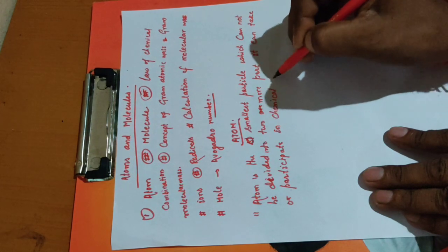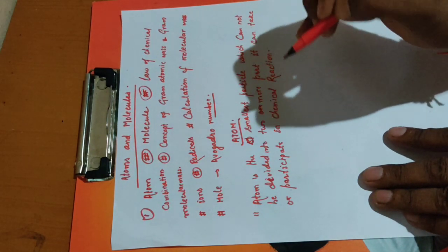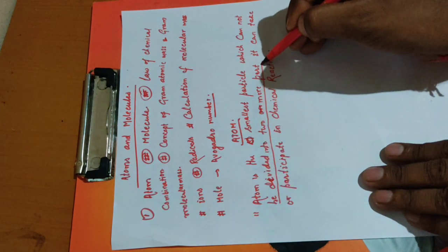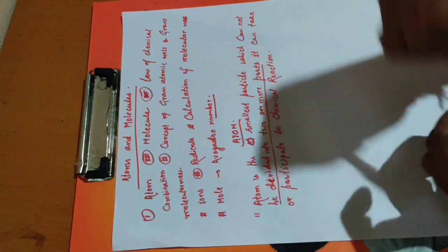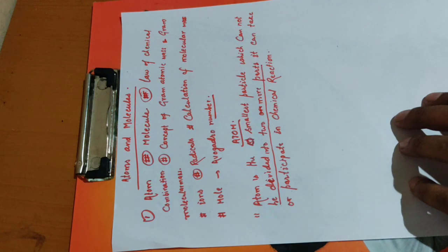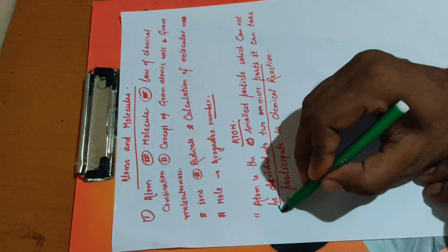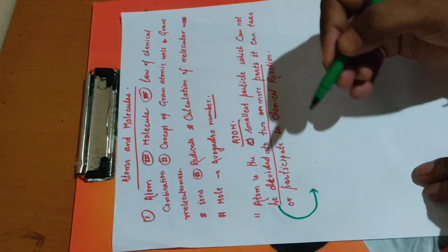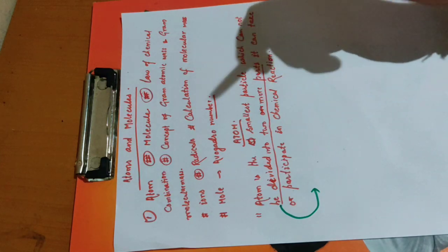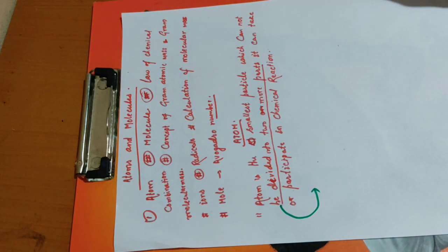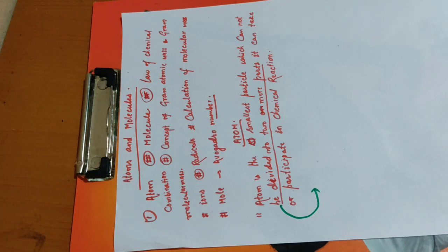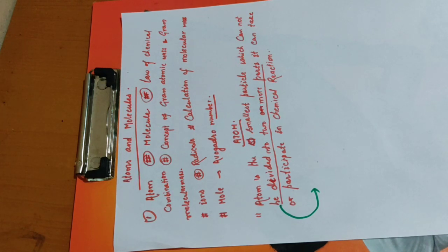That is, electron, proton, and neutron - these are known as the subatomic particles, the alag particles of an atom. So as told here, jo atom hai, vo kya hai?